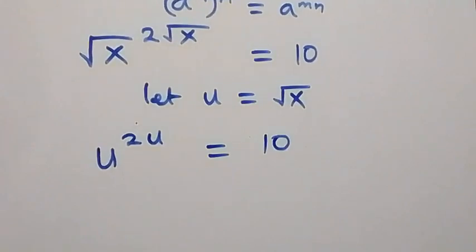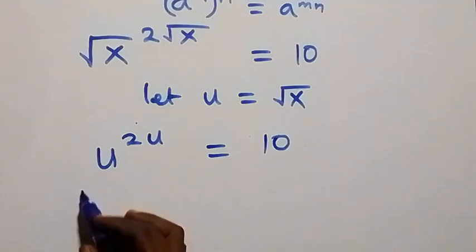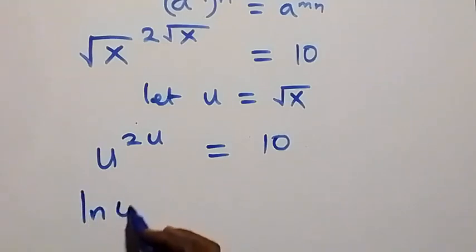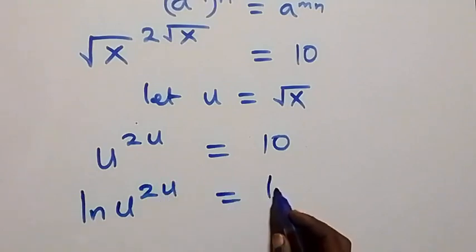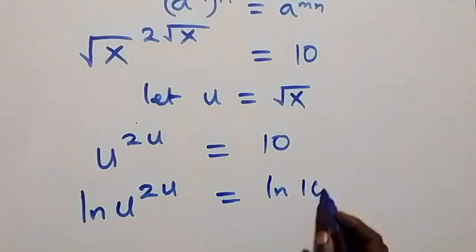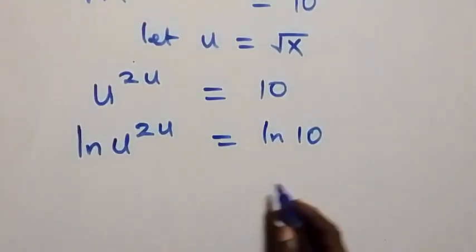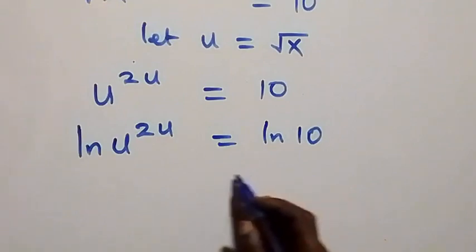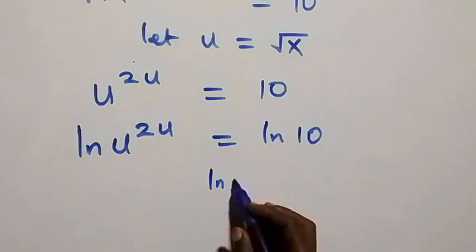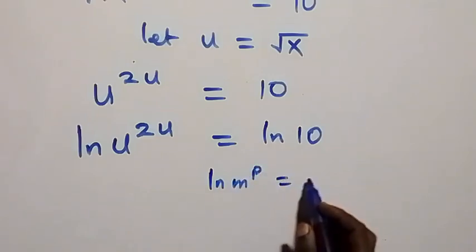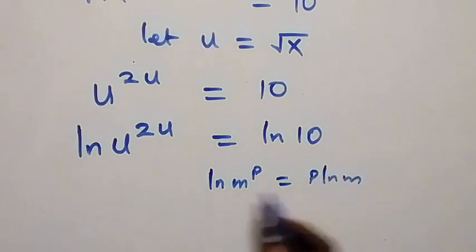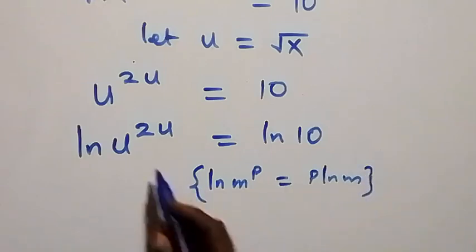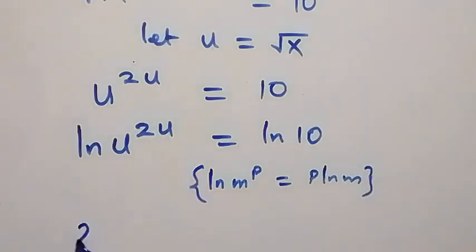The next step: let's take the ln on both sides. We have ln of u raised to power 2u equals ln 10. From the law of logarithms, ln of m raised to power p is the same as p·ln m. So the power here is 2u, giving us 2u·ln u.